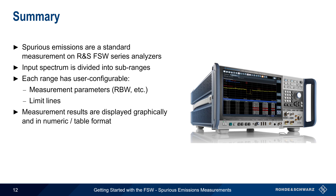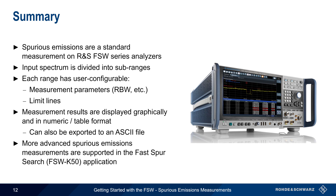Measurement results are displayed both graphically and in numeric or table format, and these measurement results can be easily exported to an ASCII file for documentation or additional analysis. Although the standard spurious emissions measurement function is sufficient for many applications, the FSW also supports more advanced spurious emission measurements in the FSW-K50 Fast Spur Search application.